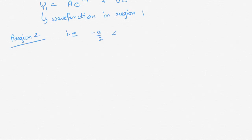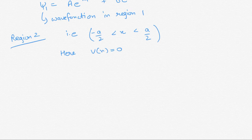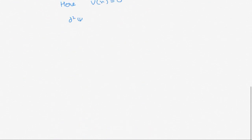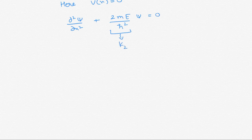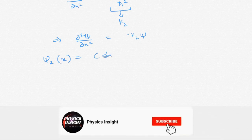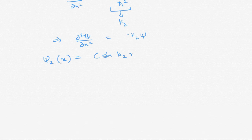In region 2, between −a/2 and a/2, V(x) = 0. The Schrödinger equation becomes d²ψ/dx² + k₂²ψ = 0, where k₂ is defined accordingly. The solution to this differential equation is a combination of sine and cosine terms. ψ₂ represents the wave function in region 2.